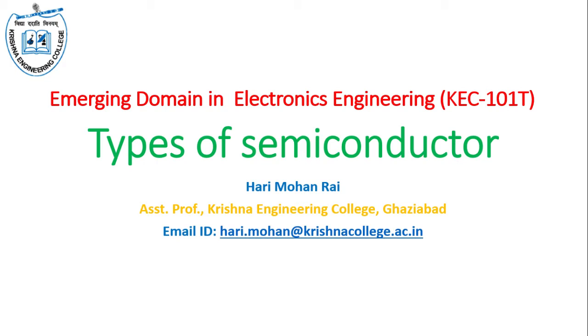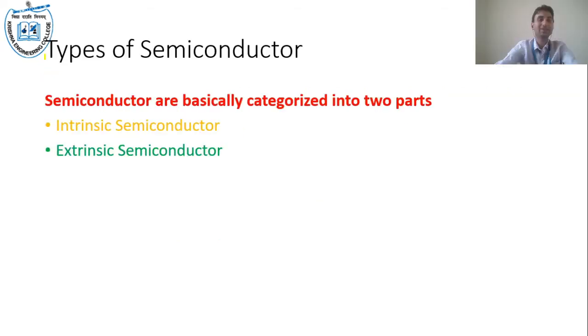Today we will study how many types of semiconductor there are. In case of types of semiconductor, we have already discussed conductor, insulator, and semiconductor. Here we will see there are basically two types of semiconductor. It is categorized in two parts: first is intrinsic semiconductor, and the second is called extrinsic semiconductor.